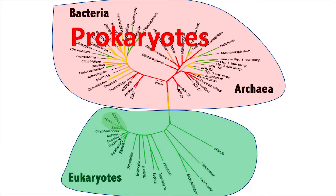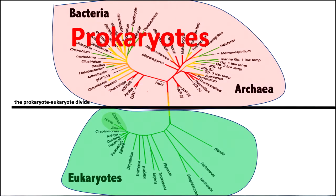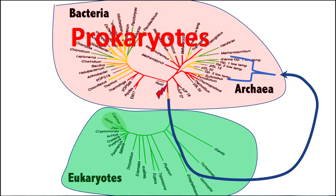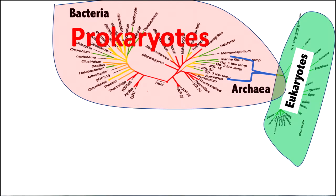Now, it has been said that the prokaryote-eukaryote divide — that's this black line — is the greatest single evolutionary discontinuity to be found in the present-day world. This is a statement from 1963. But recently, we've taken a closer look at where the eukaryotes branch from the prokaryotes, and that root we've put here is wrong. It should be somewhere over there in the blue.